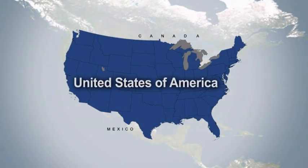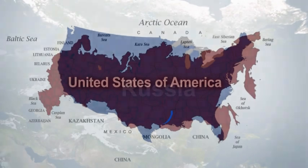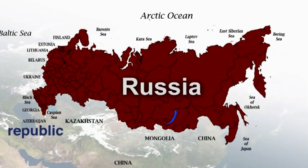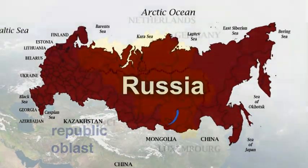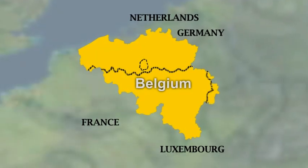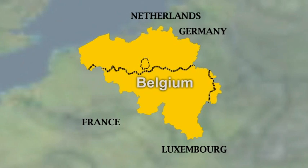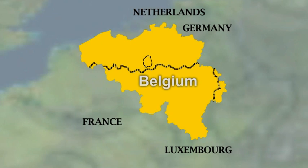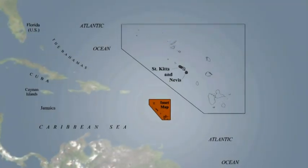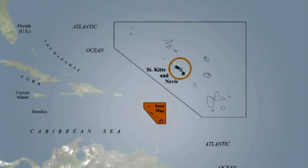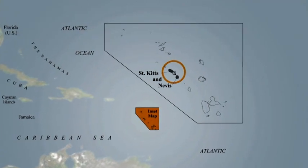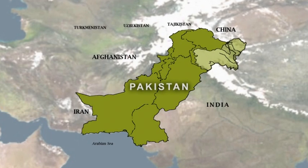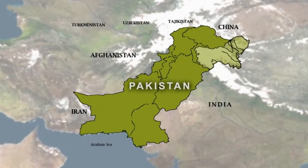The United States has 50 units called states. Russia has 86 with a number of different names such as Republic and Oblast. Some federal countries have very few. Belgium has three regions and three community governments that span more than one region. The Caribbean federation St. Kitts and Nevis and a few other federal countries have only two.